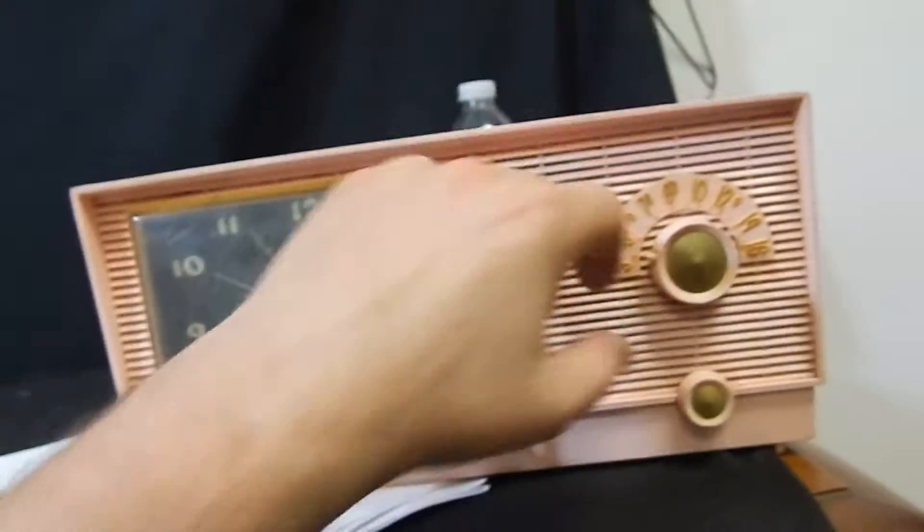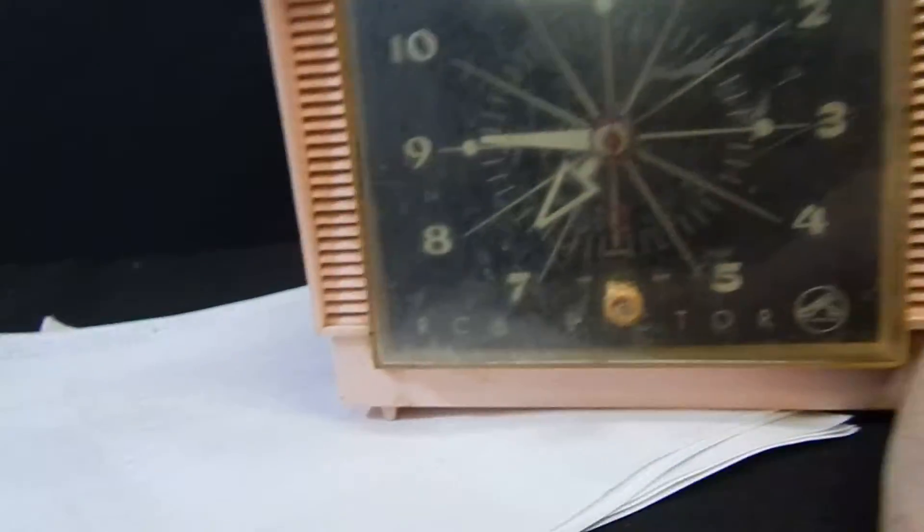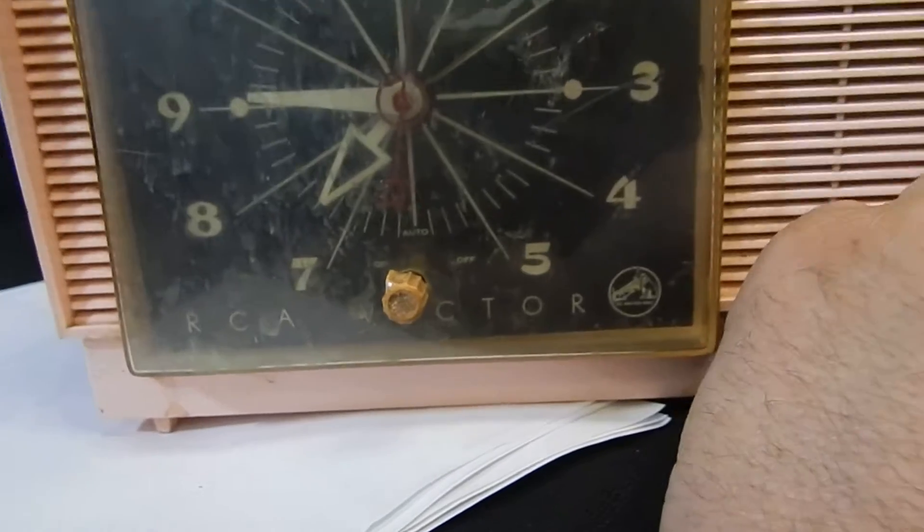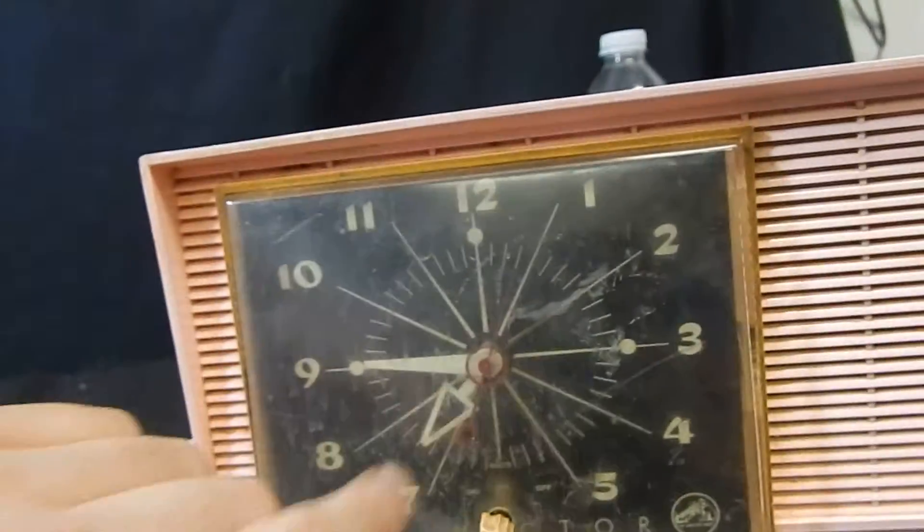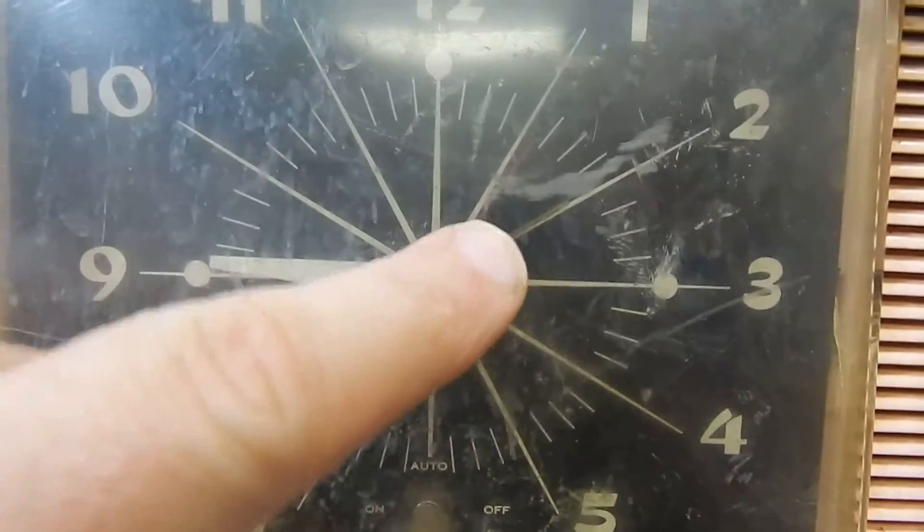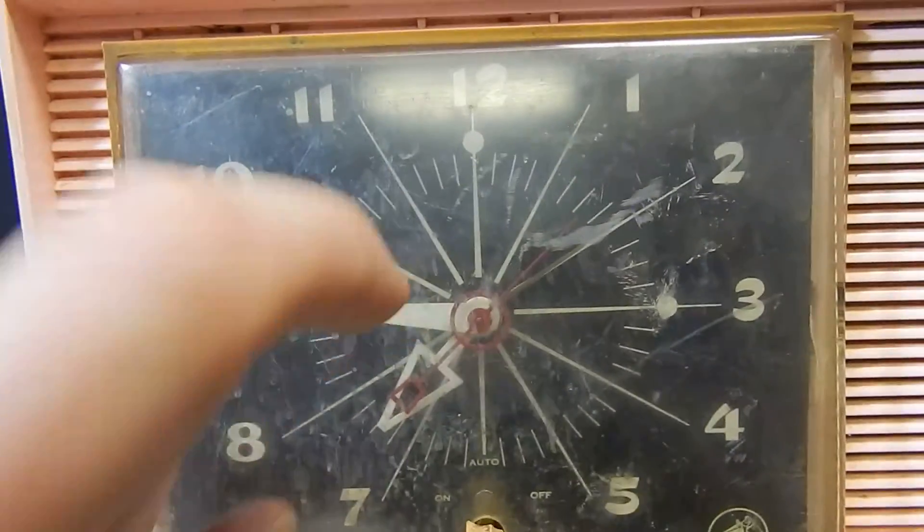The middleman LLC. We have an RCA Victor. As you can see, the second hand is moving, so the clock is working.